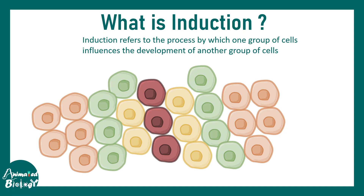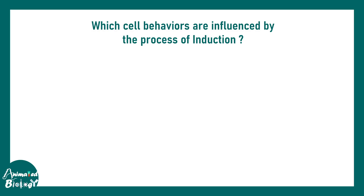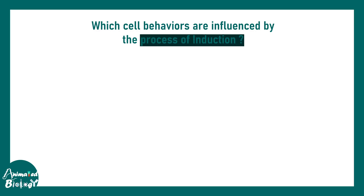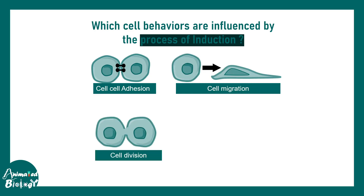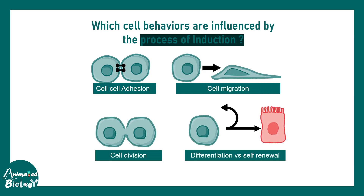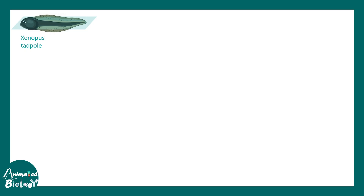If you'd like to watch the video on morphogen gradients, it's linked in the video. The question is: which cellular behaviors could be influenced by the process of induction? It turns out many aspects — cell adhesion, cell migration, cell division, and differentiation to a specific fate — can all be influenced by induction. That's why it's so important in the context of development.